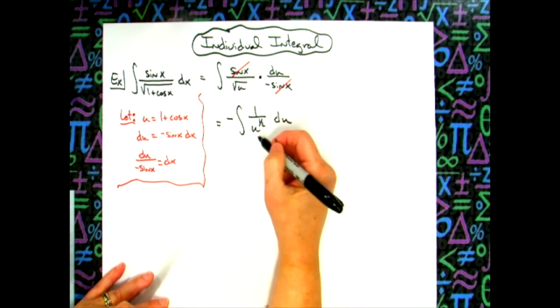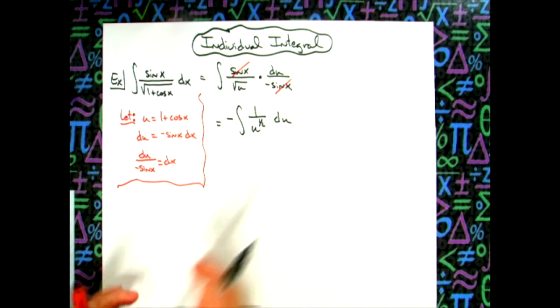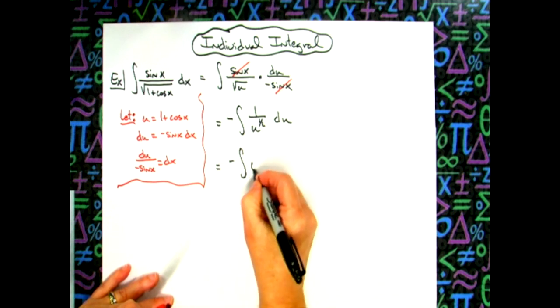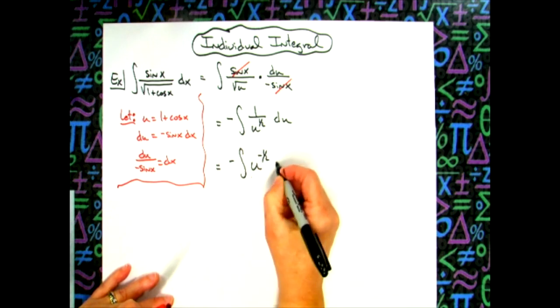We'll move this up to the top using our laws of exponents. So we'll have negative integral of u to the negative 1 half du.